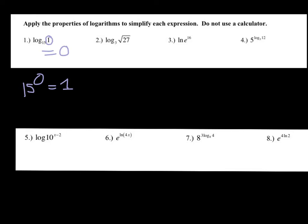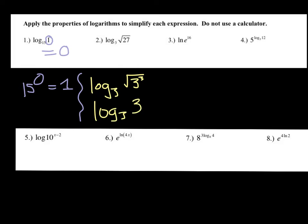Number two is where rewriting between radical and exponential form comes in handy. Can we write 27 with a smaller base? Yes. This becomes log base 3, and I'm going to rewrite 27 as 3 cubed. Since you can't see an index it's really an index of two, so I rewrite this in exponential form as log base 3 of 3 to the three-halves power. When the argument and the base of your log are the same, they cancel, and this expression equals three-halves.